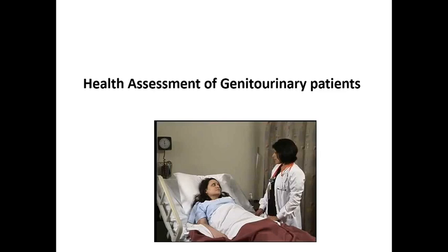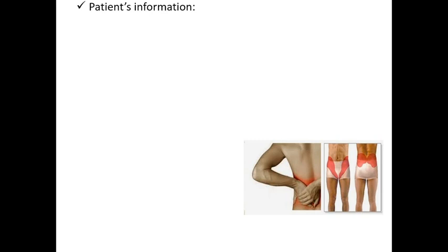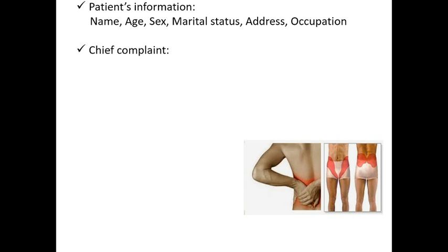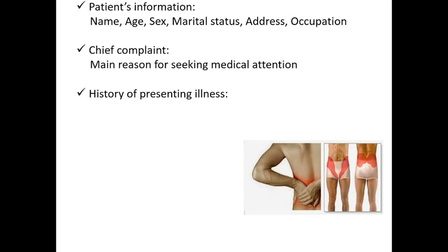First, we will see the health assessment of genitourinary patients. The history should include patient information — name, age, sex, address, occupation, and marital status of the patient. The chief complaint is the main reason why the patient has come in search of medical attention. Next comes the history of presenting illness — in detail we have to find out about the chief complaint.